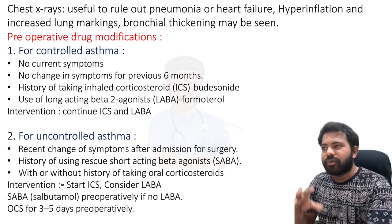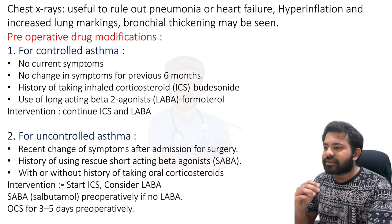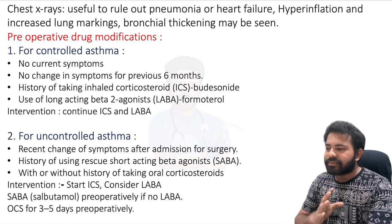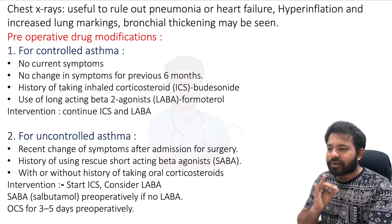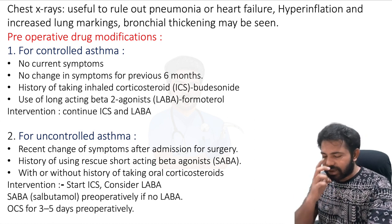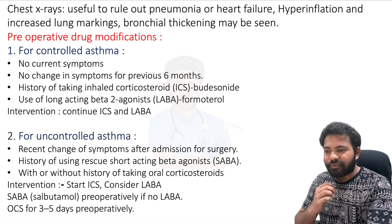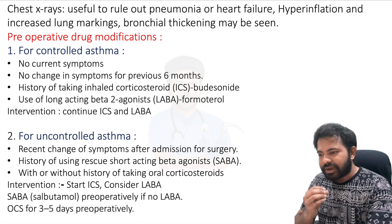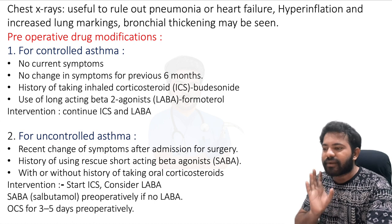For preoperative drug modifications: for controlled asthma — no current symptoms and no change in symptoms for the previous six months, with no history of using inhaled corticosteroids or long-acting beta-2 agonists like formoterol — the intervention is to continue the inhaled corticosteroids and long-acting beta-2 agonist. Simply continue the existing drugs.